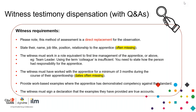The witness must work in a role equivalent to first-line management — it cannot be a colleague at the same level. You need to state how the person had responsibility for that apprentice. To conform to VACS, the witness must have worked with the apprentice for a minimum of three months during the apprenticeship. Dates are often missing from the documentation, so please ensure all dates are included. The witness must provide work-based examples of where the apprentice has demonstrated competency against the standard, and must sign a declaration that the examples are true accounts.